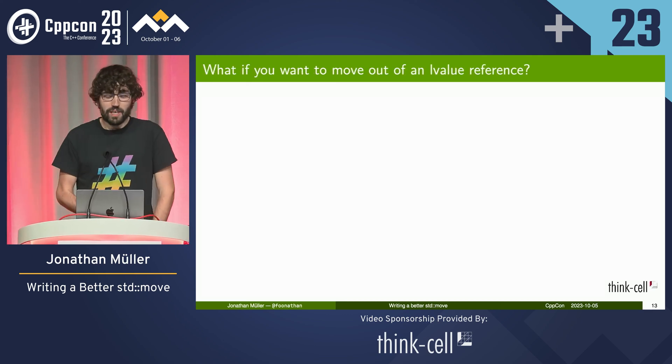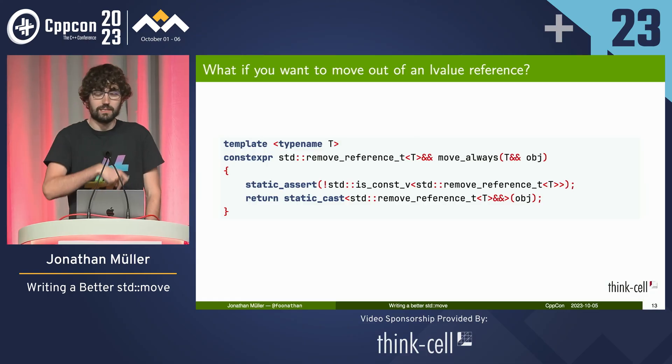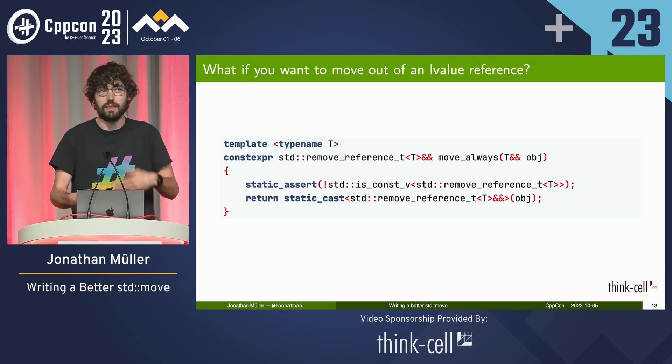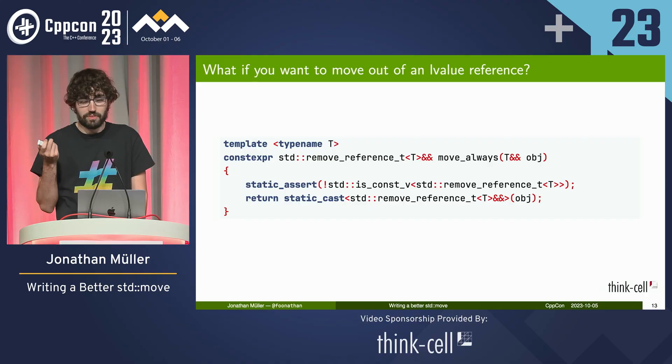If you actually want to move out of an L-value reference, you have the function move_always. It's the same as the one earlier but it doesn't do the checks. This is the special opt-in for the dangerous behavior.